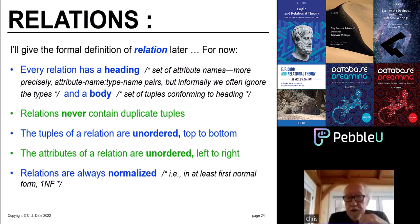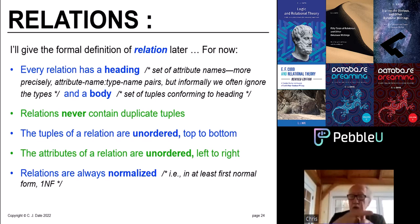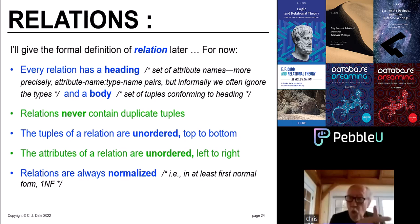Last, relations are always normalized — equivalently, they are in what's called First Normal Form. What that means is: if you look at any intersection point between a tuple and an attribute, you always find exactly one value — no more, no less, and nothing else.